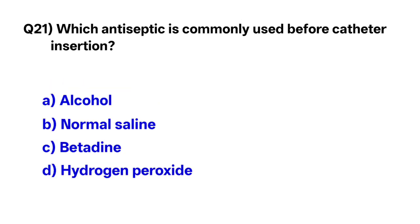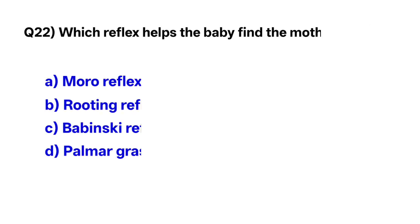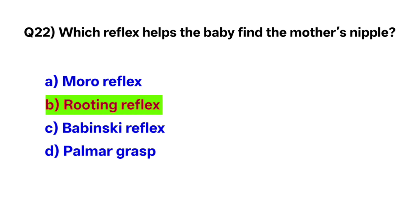Question number twenty-one: Which antiseptic is commonly used before catheter insertion? The correct option is C. Question number twenty-two: The correct option is B, rooting reflex.